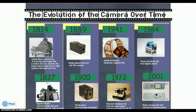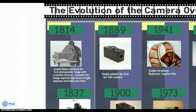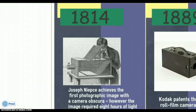The evolution of the camera over time. The first camera was invented in 1814 by Joseph Niepce. He was the first to achieve a photographic image using light and reflection. The downside of this system was that it required eight hours of light for the image to develop, and after developing, the picture would begin to fade.